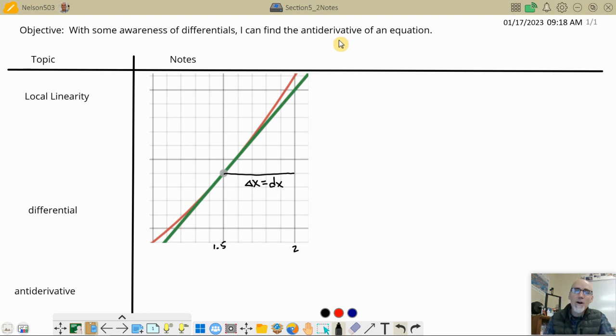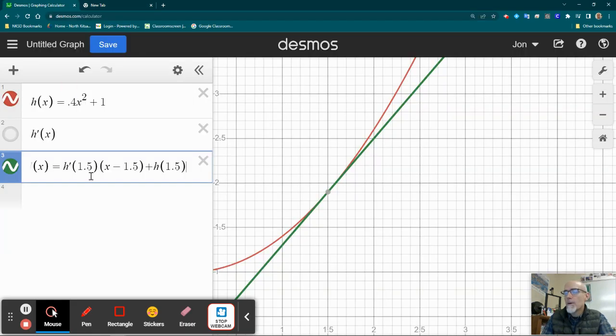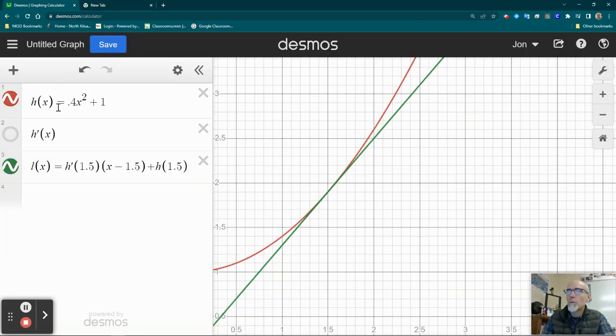So here's what I have on Desmos. I want you to look at something with me. I put in a function. You can see the red function. It's some h of x function. I'm not going to make up a story for this. And you can see it's that red parabola right there. Then I said, well, let's take the derivative and you could do that algebraically. I did it initially and then I thought, well, it just kind of complicates things to have 0.8x here, but you could definitely do that power rule.